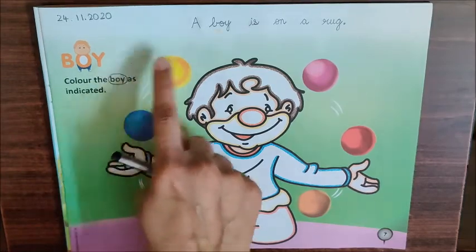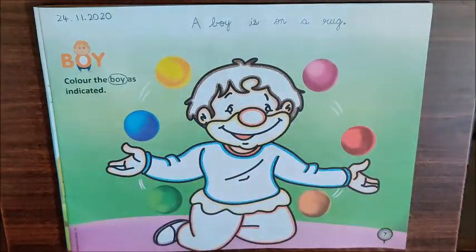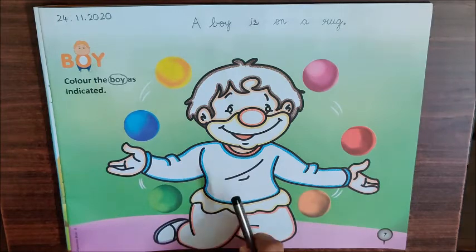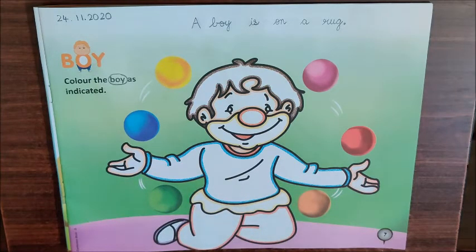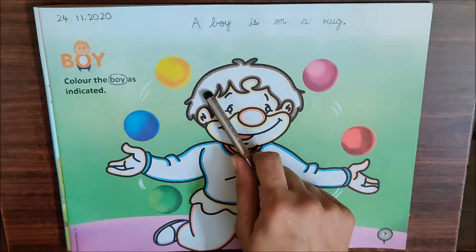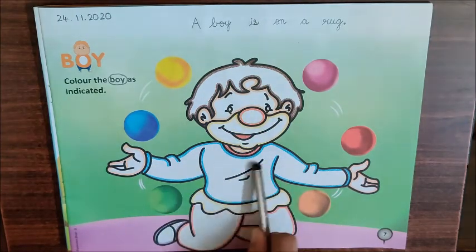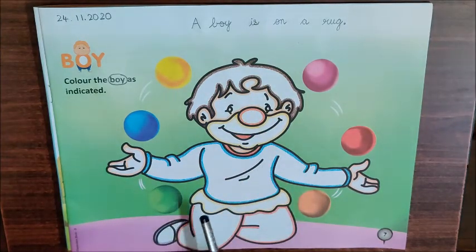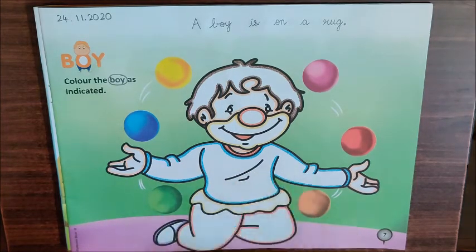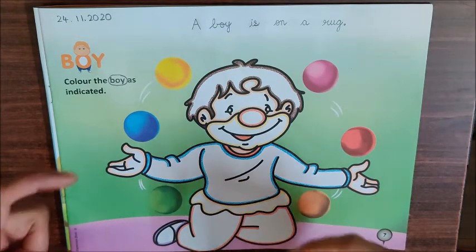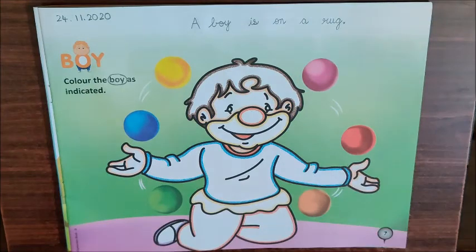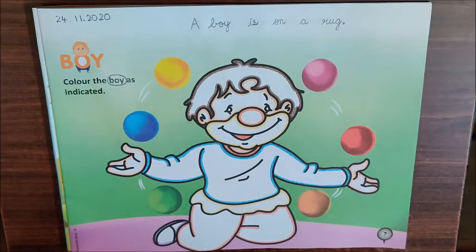Now, after doing the word search and writing the sentence, you have to color this picture as indicated with crayons. You will do brown color in the hair, red color in the nose, and blue color here. Color the boy as indicated. After coloring this picture beautifully, you will share a photo of this page with your class teacher. So children, enjoy coloring the boy. Bye-bye.